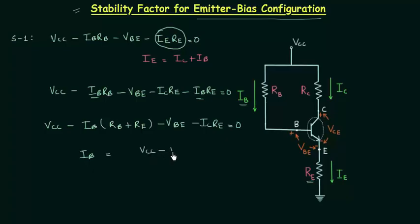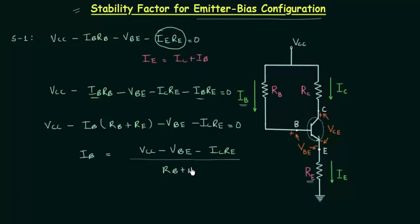Finally, we have base current IB equal to (VCC minus VBE minus IC·RE) divided by (RB plus RE). Let's call this equation number one, and this is all we need to do in step number one.